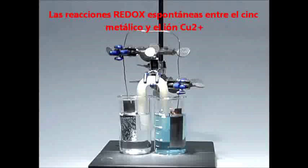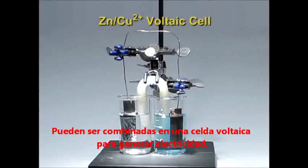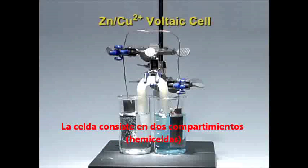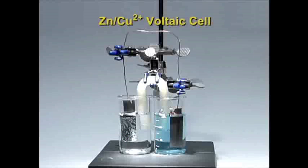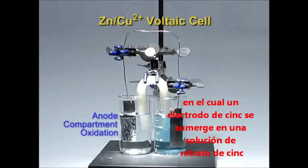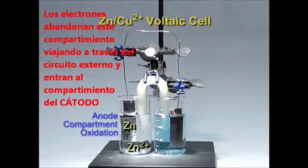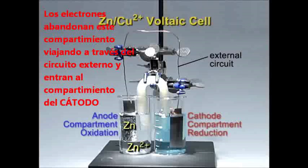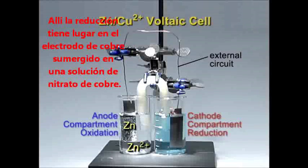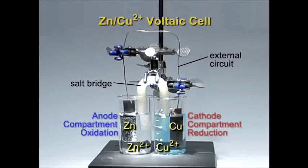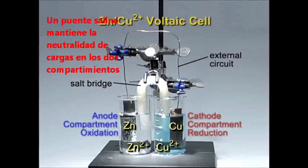The spontaneous redox reaction between zinc metal and copper ion can be harnessed in a voltaic cell to generate electricity. The cell consists of two half-cell compartments connected by an external circuit. Oxidation takes place in the anode compartment, in which a zinc electrode dips into a zinc nitrate solution. Electrons leave this compartment, travel through the external circuit, and enter the cathode compartment. There, reduction takes place at a copper electrode dipping into a copper nitrate solution. A salt bridge maintains charge neutrality in the two compartments.